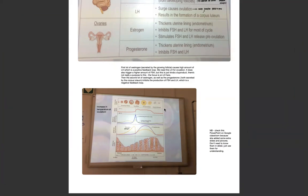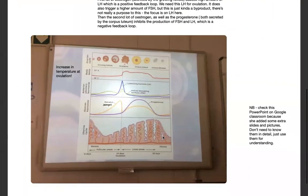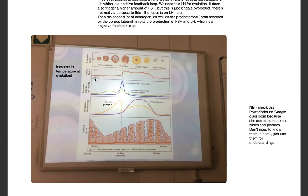Looking at another diagram showing hormone levels, we can see how the follicle develops and forms the corpus luteum. Interestingly, just before ovulation, body temperature spikes slightly. Some women use this increase in body temperature to identify that they are ovulating.